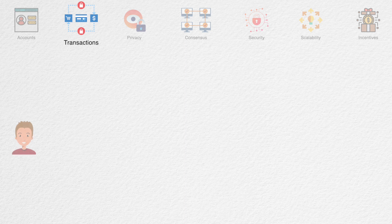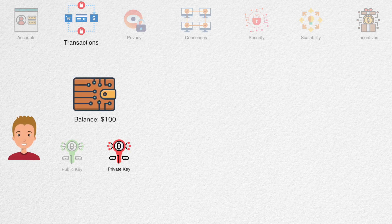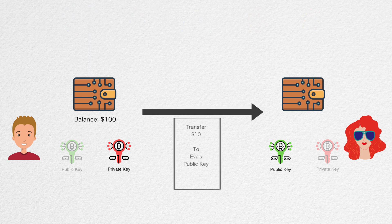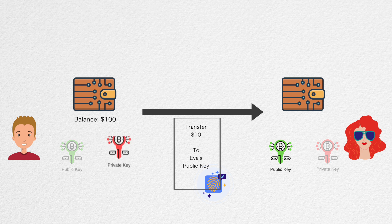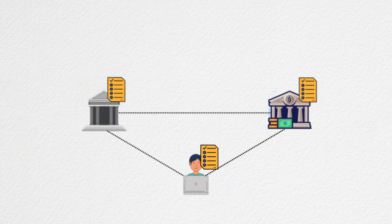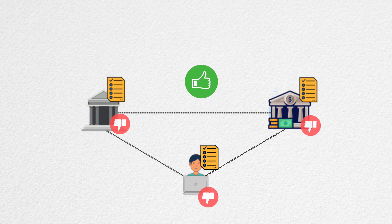To send money on a blockchain, you will need two things: an account for yourself with the required amount and the public key or address of the recipient. You can create a transaction that reads something like 'transfer 10 coins from address A to address B.' To prove that you are the owner of account A, you must digitally sign the transaction using your private key. Anyone can verify the validity of the signature using your public key, but to create a valid signature you will need the private key. This also ensures that no one can tamper with the transaction and steal your funds, as any changes to the original message will invalidate the signature.